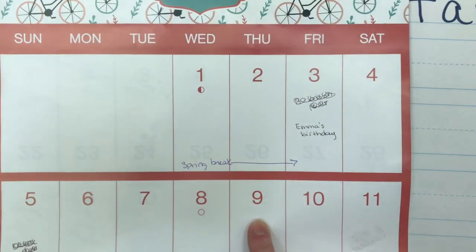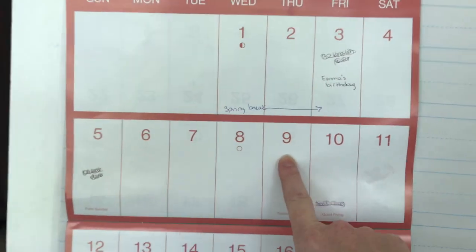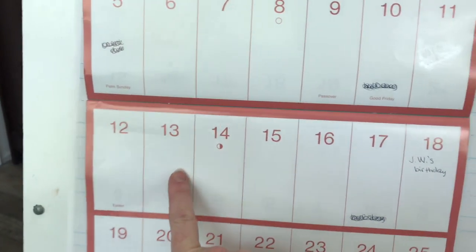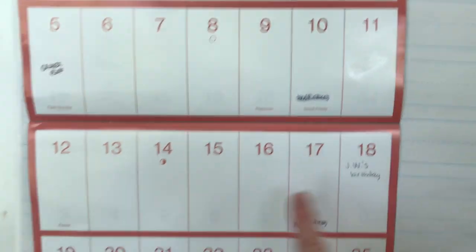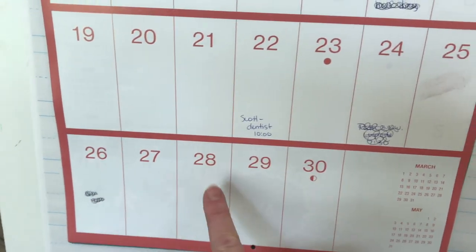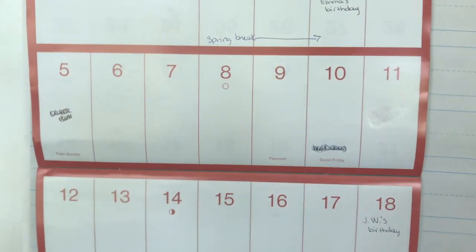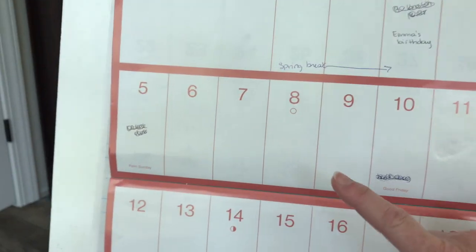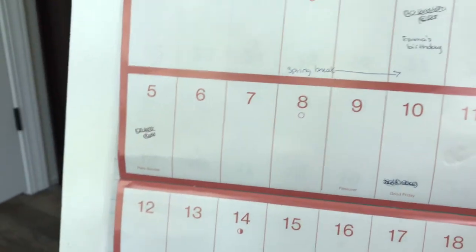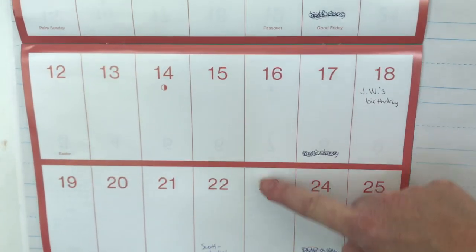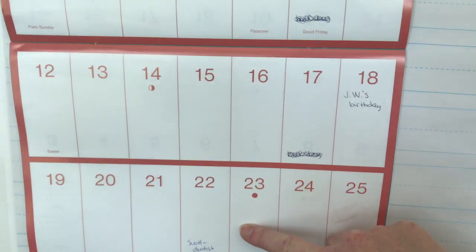It is April 9th, 2020. Let's count how many days we still have left in the month of April. Ready? 1, 2, 3, 4, 5, 6, 7, 8, 9, 10, 11, 12, 13, 14, 15, 16, 17, 18, 19, 20, 21. There's actually an easier way — how many days are there in a week? Seven! So we go to next Thursday — that's seven days — then another Thursday — another seven — then the last Thursday — another seven. So that's seven plus seven plus seven.